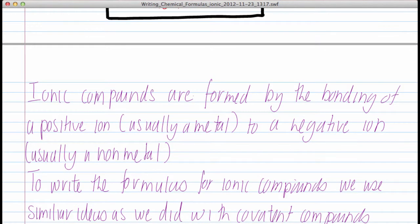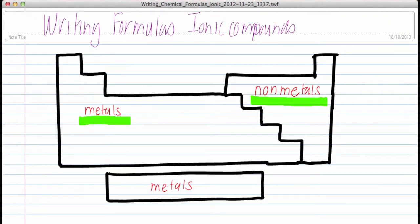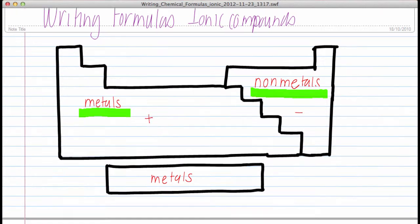Reviewing, ionic compounds are formed by the bonding of a positive ion and a negative ion, usually between non-metals and metals. Non-metals typically form negative ions, and metals typically form positive ions.